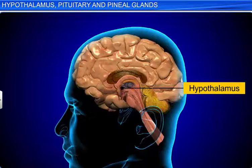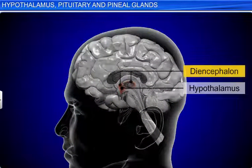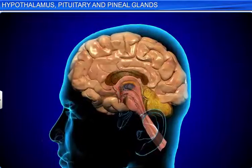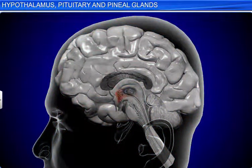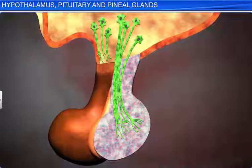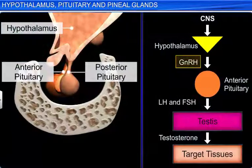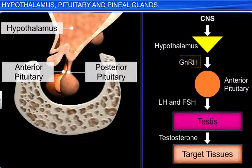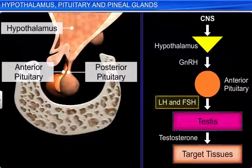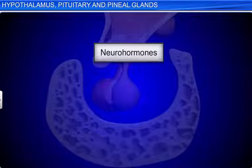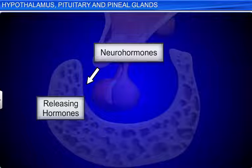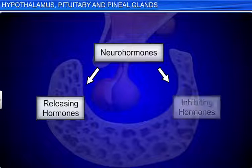The hypothalamus is a part of the forebrain and appears as the floor of the diencephalon. It is formed of grey matter that contains neurosecretory cells called nuclei, which produce hormones called neurohormones. They are of two types: releasing hormones and inhibiting hormones.